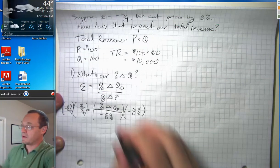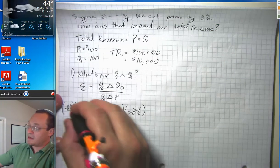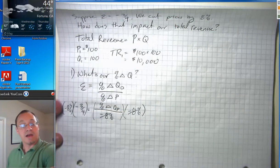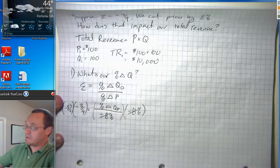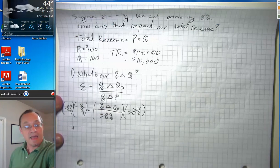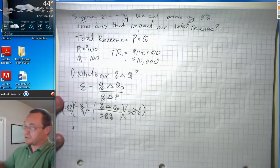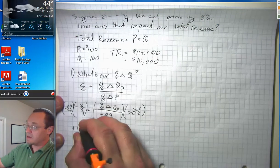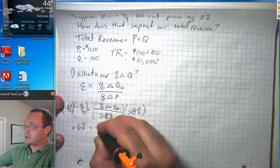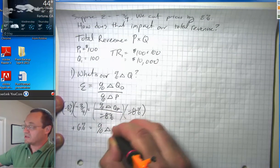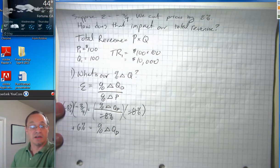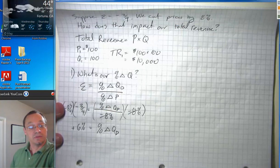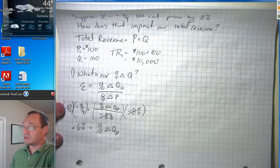That cancels this one out. And negative eight percent times negative three-quarters, the two negative signs cancel out to make a positive. And eight times three-quarters, or eight percent times three-quarters is six percent. So we have a positive six percent change in quantity demanded. Our number of units sold grows by six percent.